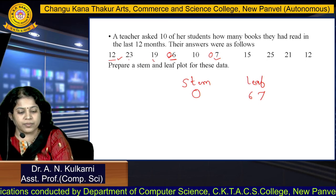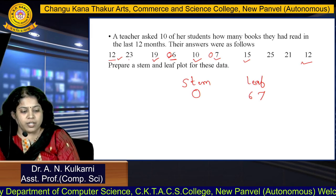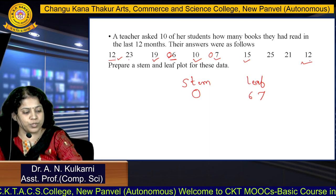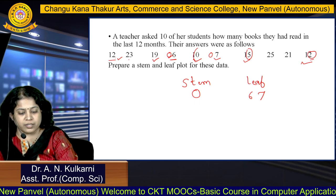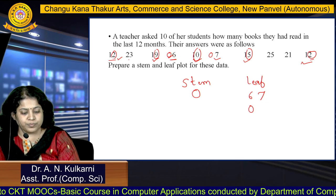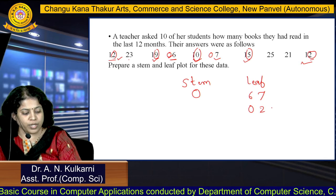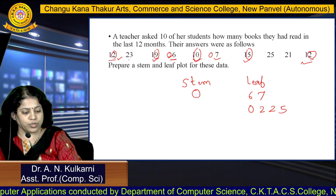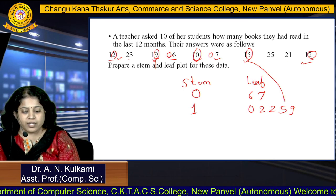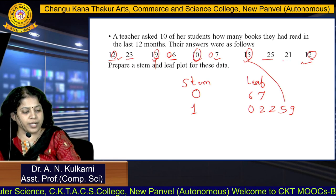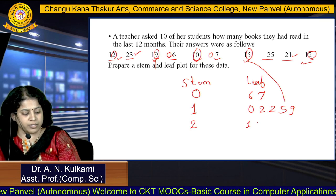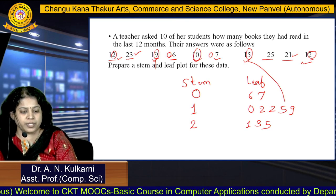Next, consider 10, 12, 12, 15, and 19. Their stem is 1. The leaves are 0, 2, 2, 5, and 9 — written in ascending order: 0, 2, 2, 5, 9 — with stem 1 written once. Then for 21, 23, and 25, the stem is 2 and the leaves in ascending order are 1, 3, 5. This completes the stem and leaf representation for the given data.